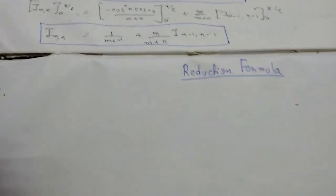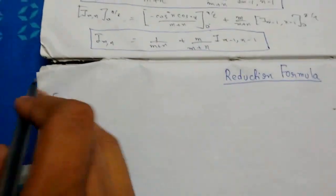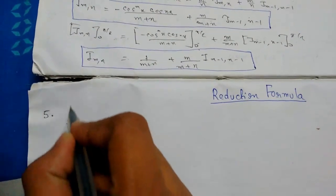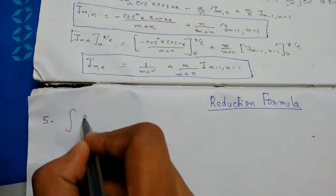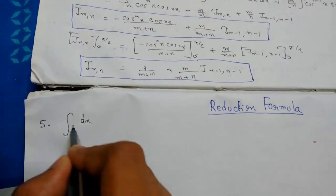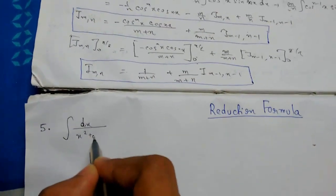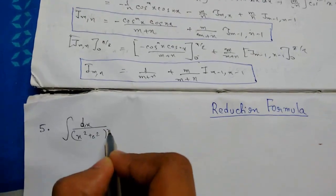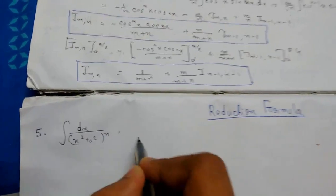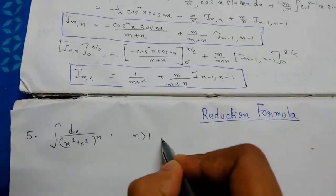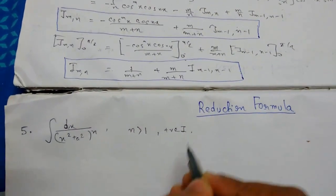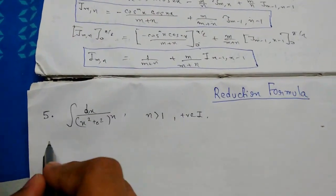Welcome back guys. Today we will be continuing reduction formulas. We will be moving on to the 5th type, which is the integration of dx upon (x² + a²)^n, where n is greater than 1 and is a positive integer. So let us start.